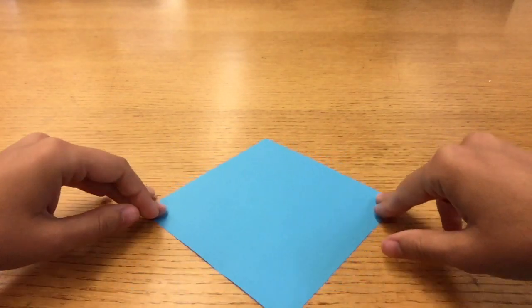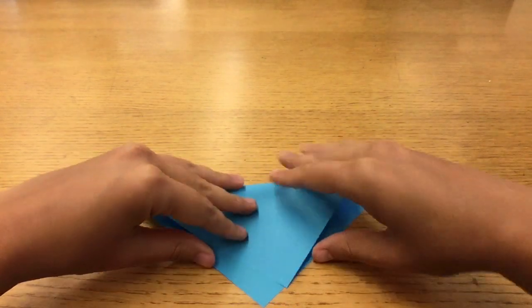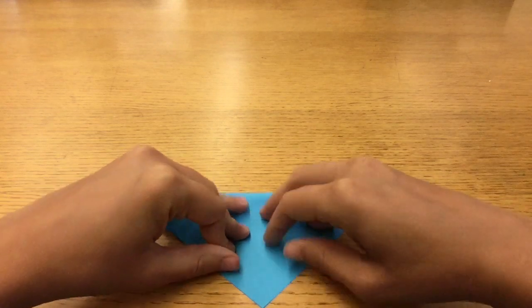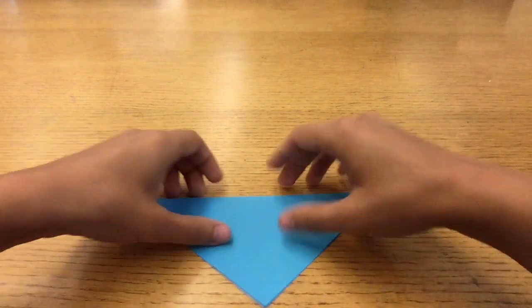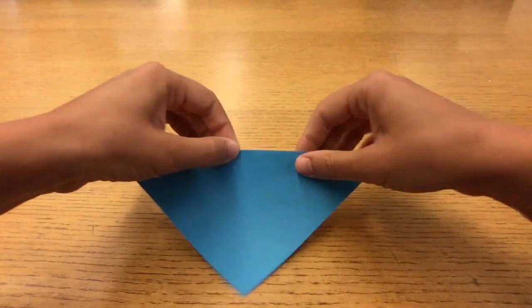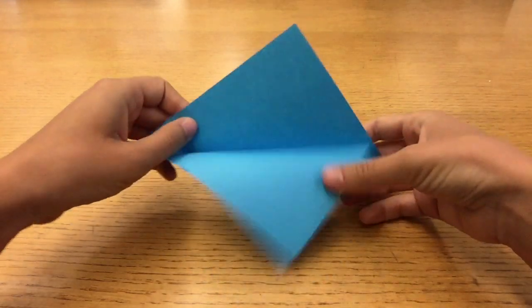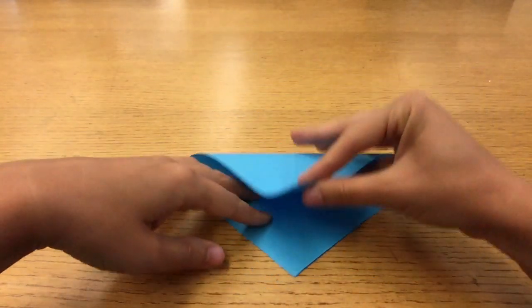Start with a sheet of origami paper, which is a perfect square, and fold it in half diagonally, lining up the corners. Press down the fold and use your fingernails to crease it well. Open it up and repeat the same step on the other two corners. Match them up as perfectly as you can and fold the crease down to create the triangle again.